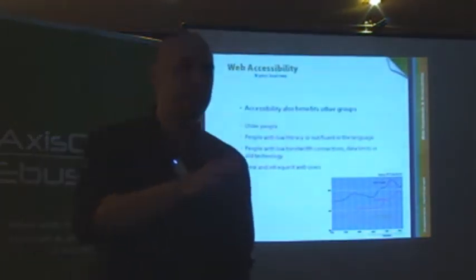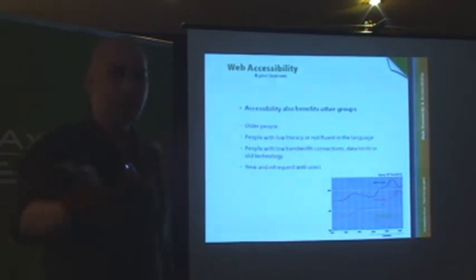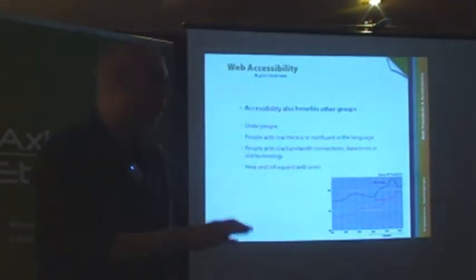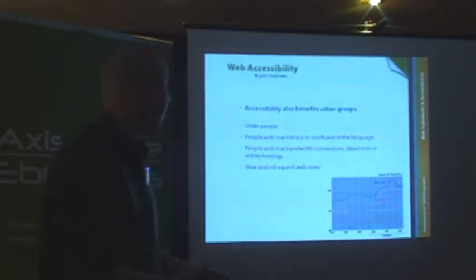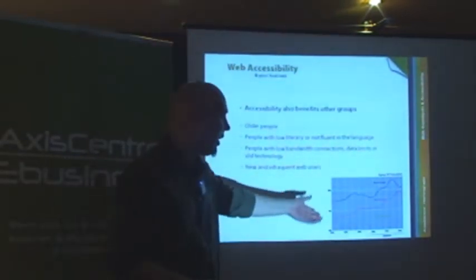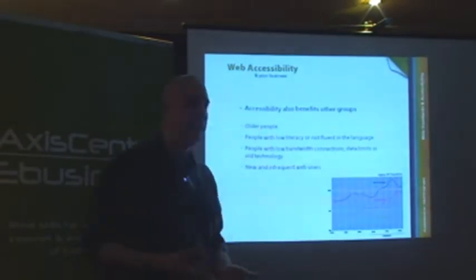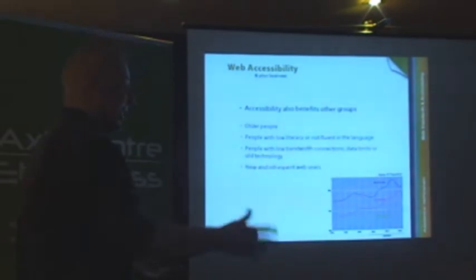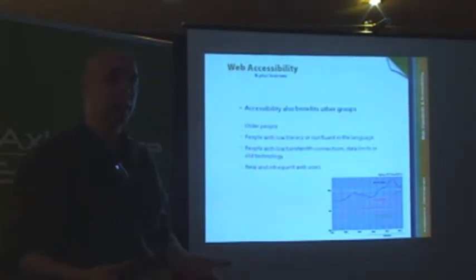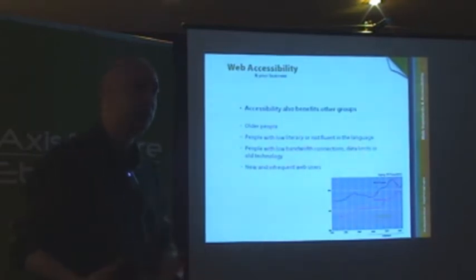Not only when it comes to accessible web design are we talking about disabilities — we're also talking about other groups of people. Older people potentially have some of the issues we've seen, sometimes a collection of those issues. Looking at the current aging UK population, potentially in the next five or ten years, about 15% of the UK population is covered by that term. We're also talking about users who aren't fluent in English — accessible websites help foreign users understand your content more easily if you follow web accessibility guidelines.